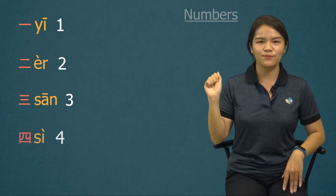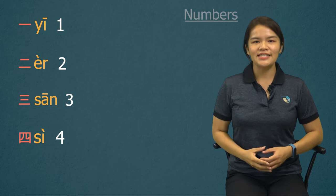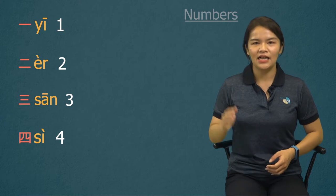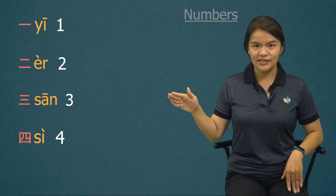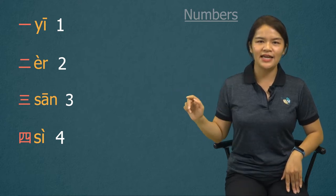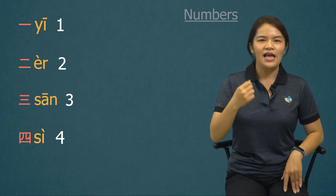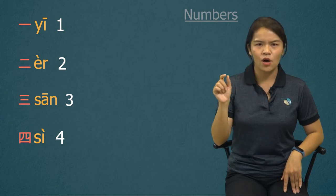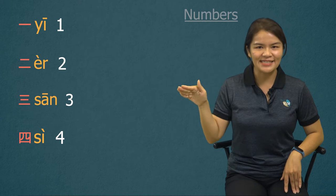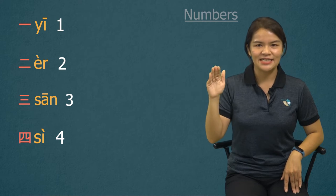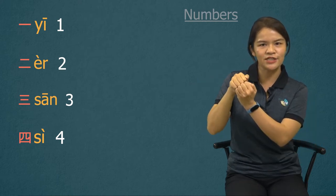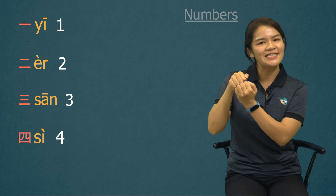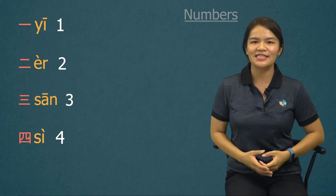Number four. 四, 四. It's a falling tone again. And the pronunciation, it's not 'she' or 'se', it's 'si', keeping your teeth stuck together. Si, si.